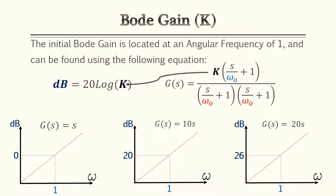The easier of the two parameters to understand is your Bode gain. The initial Bode gain is located at an angular frequency of one and can be found using the equation 20 log of k, giving the result in decibels. In the equation, k is your Bode gain — plug it into 20 log k and that provides where the gain is on the Bode plot in reference to an angular frequency of one.